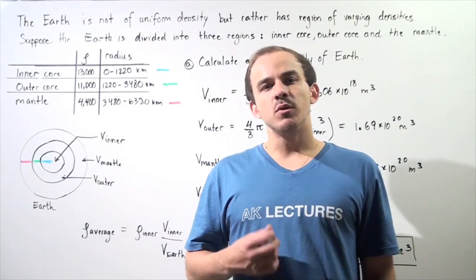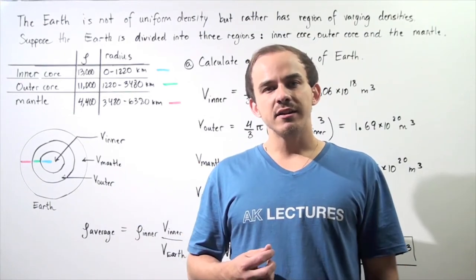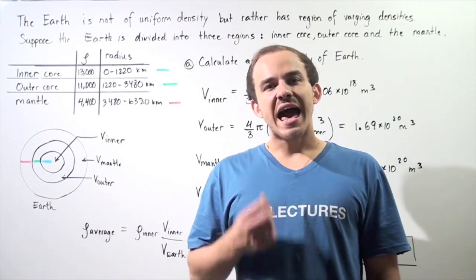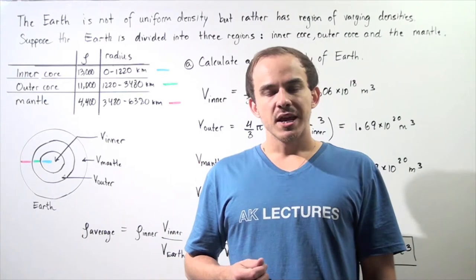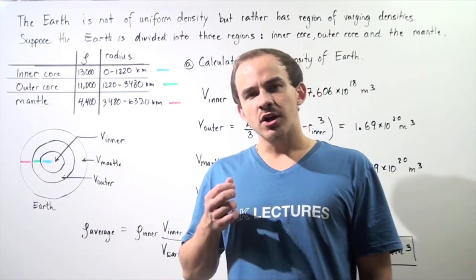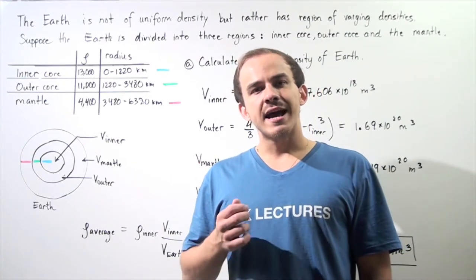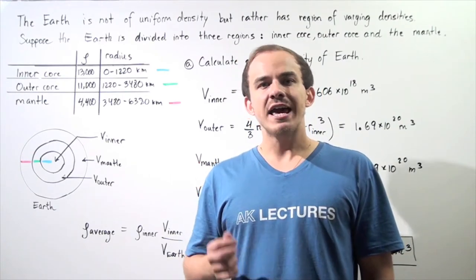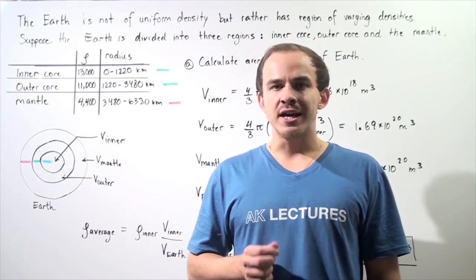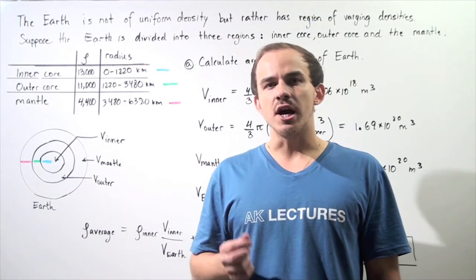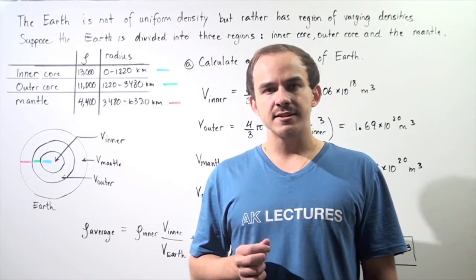In this example, we're going to calculate the average density of the Earth. Recall that the Earth does not actually have a uniform density, but rather it has regions of varying densities.